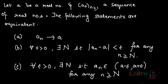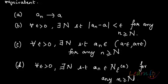...is the same as saying: for all ε > 0 there exists a number N such that |a_n - a| < ε for any n ≥ N. And it is again equivalent to saying: for every ε > 0 there exists an N such that a_n is an element of the interval (a - ε, a + ε) for any n ≥ N.